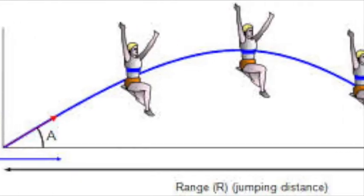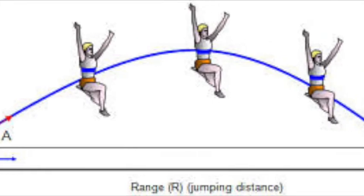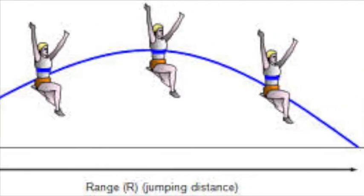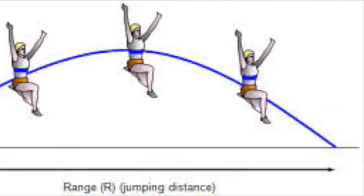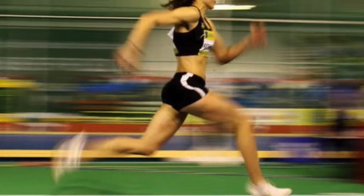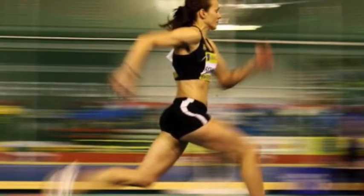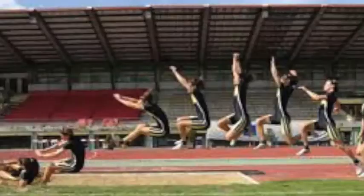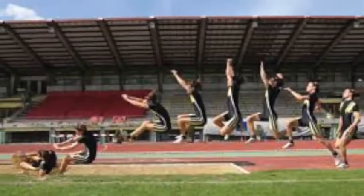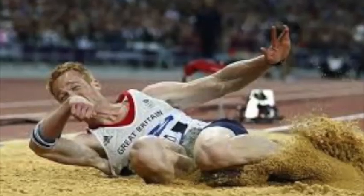The goal of long jump is to achieve the highest range or distance by jumping as far as possible. In order to make this happen, a jumper focuses on the four main phases: run-up, take-off, flight through air, and landing.